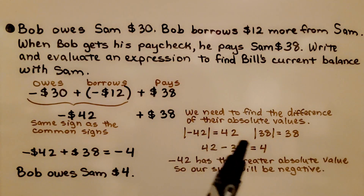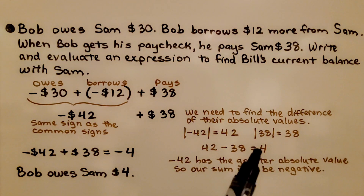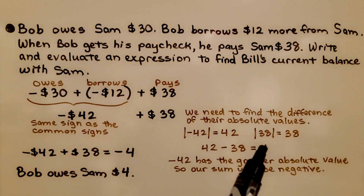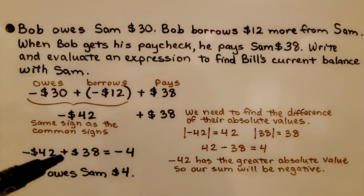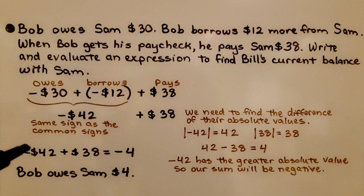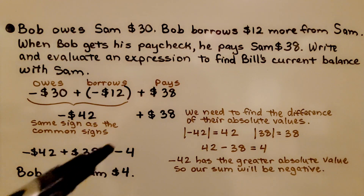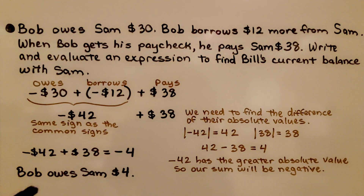We have 42 and 38, which gives a difference of 4. We take the sign of the greater absolute value — negative 42 plus 38 — and negative 42 has the greater absolute value, so we have negative 4. That means Bob owes Sam only $4 now.